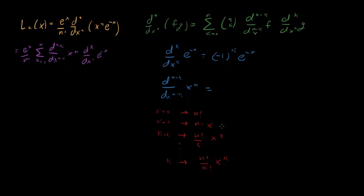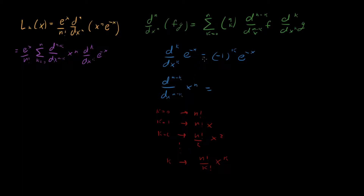As a nice check: if we pick k equals 0 we get n factorial — good. If we pick n equal to k, we don't take any derivatives, and we see the n factorials cancel giving us 1, with x to the k equal to x to the n. So for both endpoint cases this expression makes sense, and as we've argued it makes sense for all intermediate cases too. The (n minus k)th derivative of x to the n is n factorial over k factorial times x to the k.